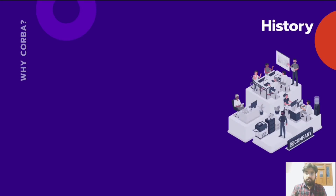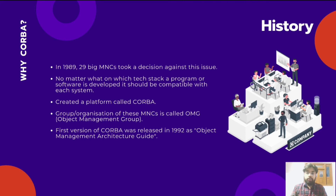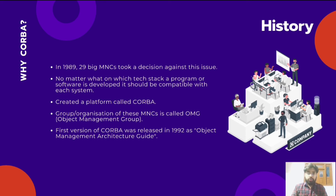So in 1989, 29 big MNCs took a decision to create a solution to this issue. It was concluded that no matter what programming language or technical stack a particular software is developed on, it should work perfectly and its proper utilization should be done. So these 29 MNCs took an initiative in 1989 and created a platform called CORBA — Common Object Request Broker Architecture. They did not give a name of a particular company to this initiative; instead, they gave a common name to this group, an organization independent of all the companies included. Today we know that group as Object Management Group, or OMG, which was formed in 1989.